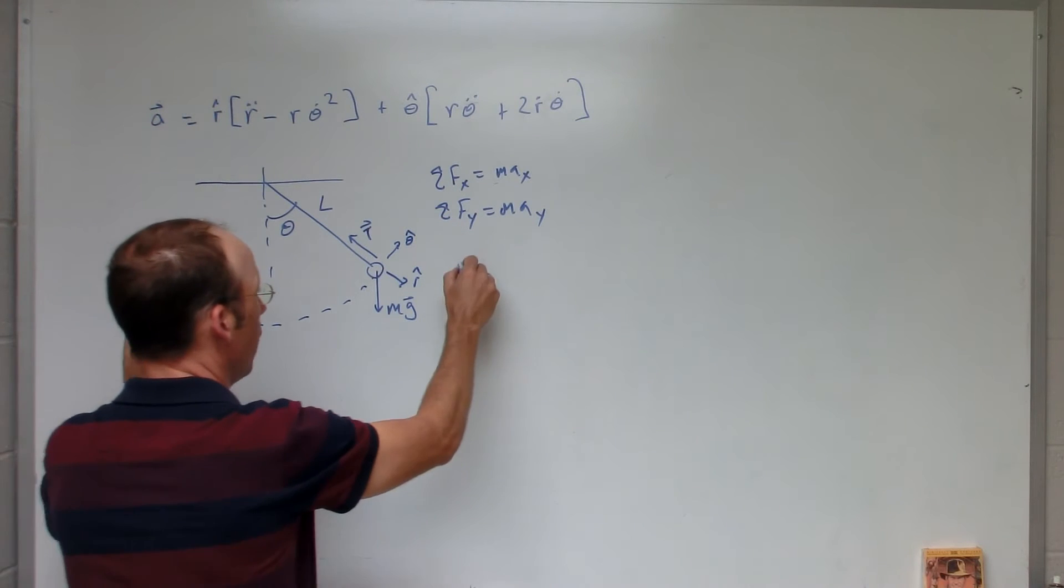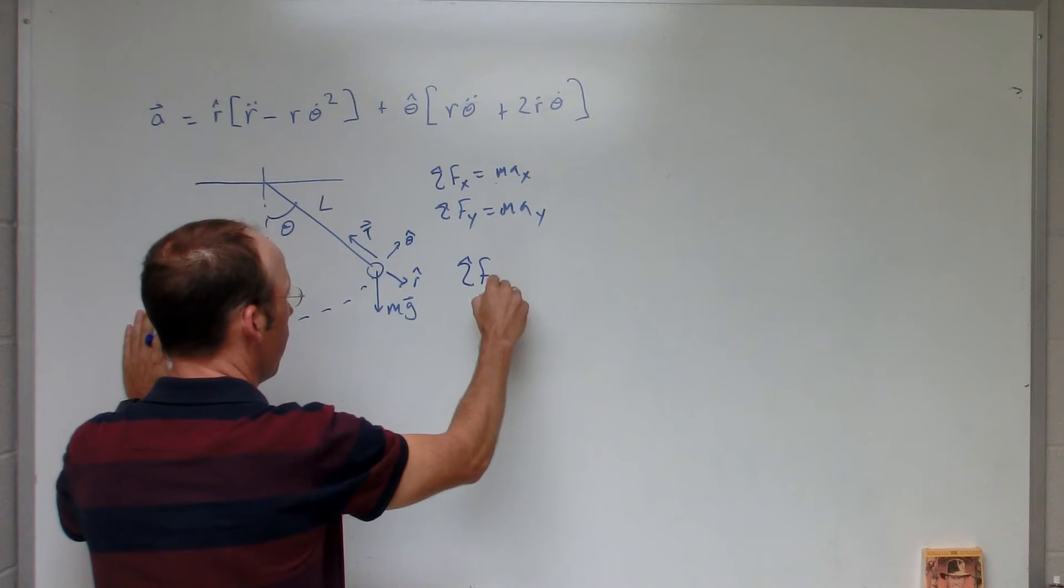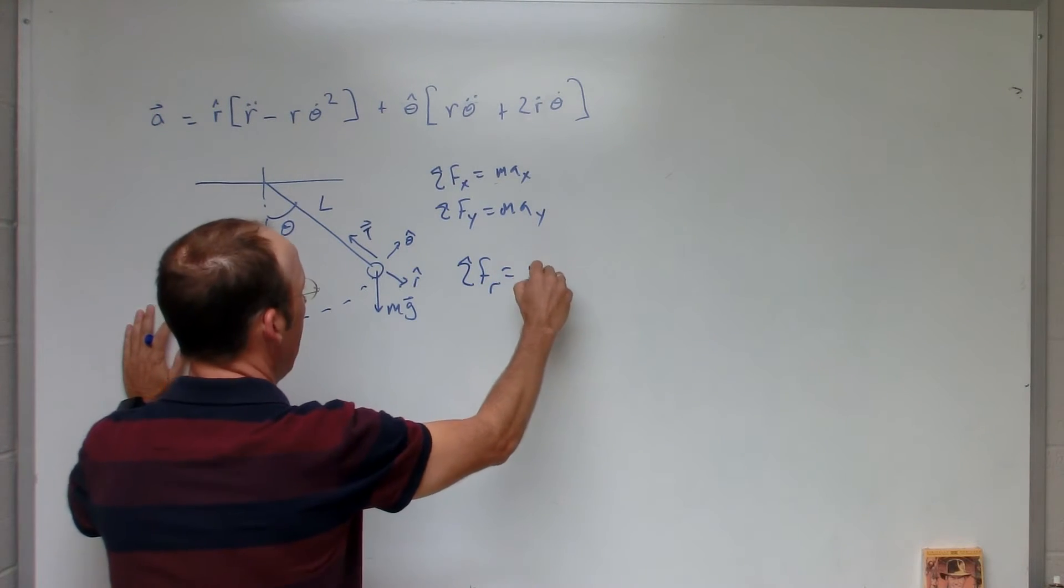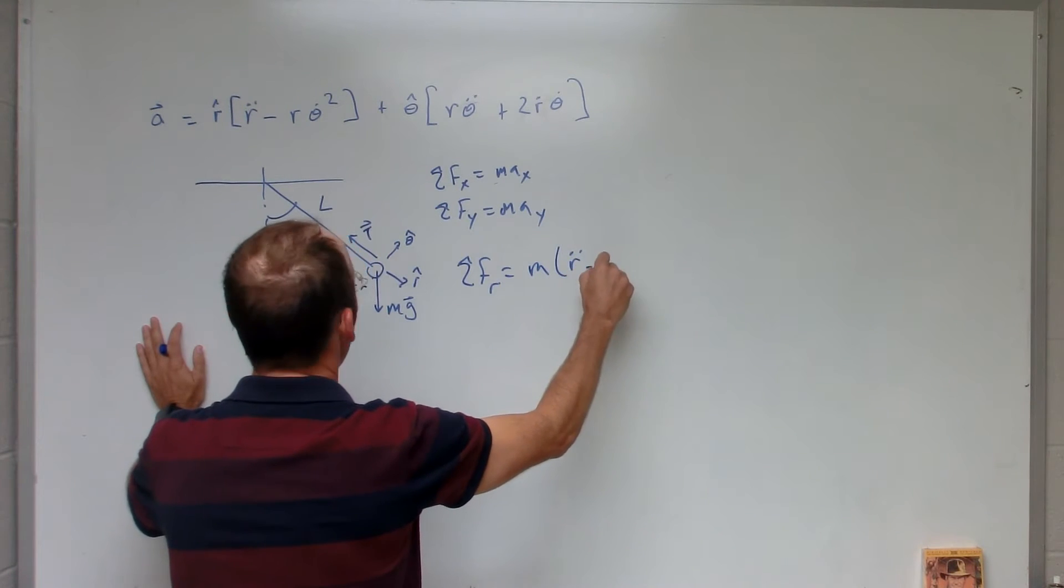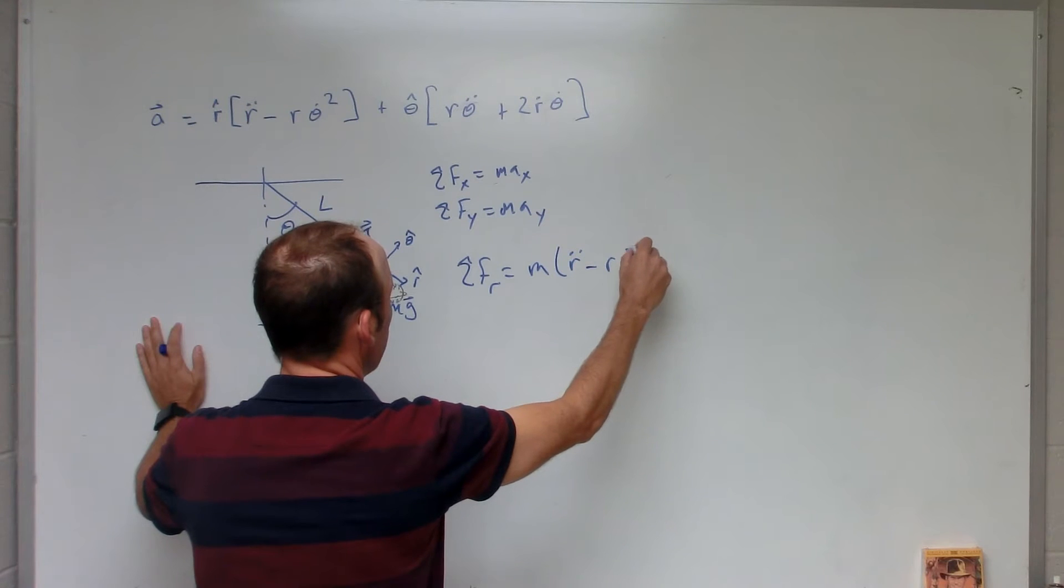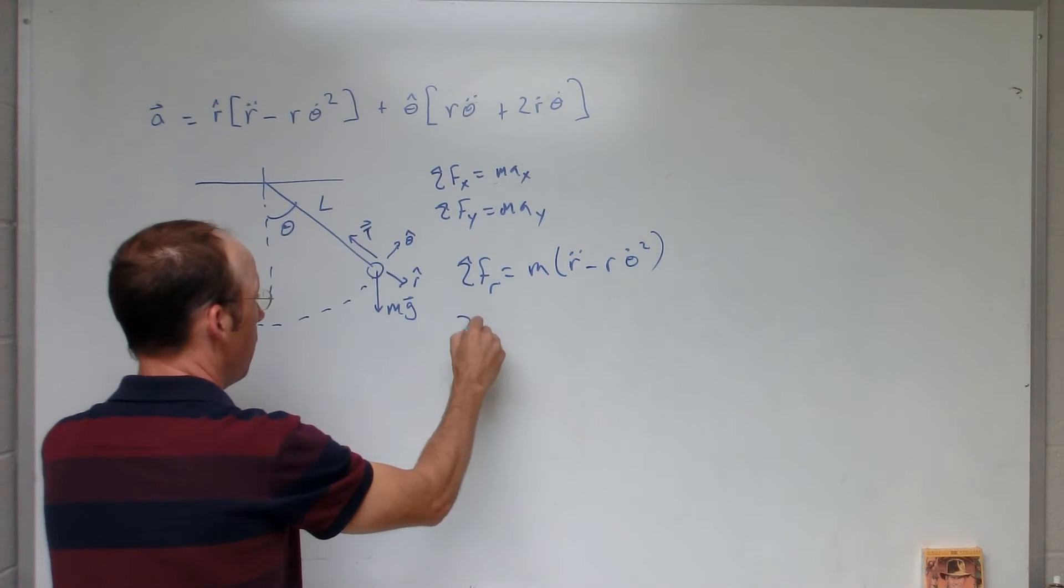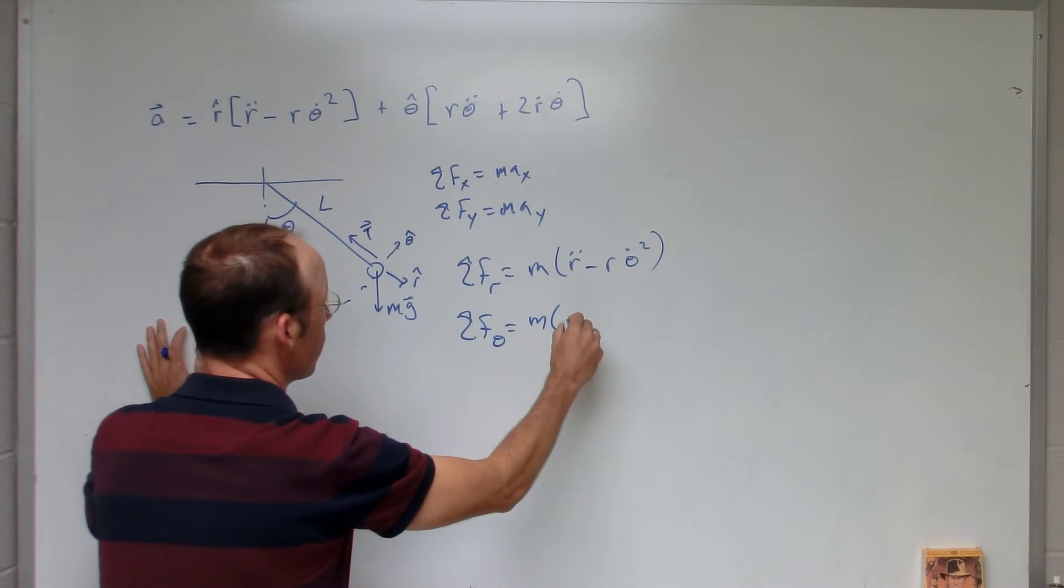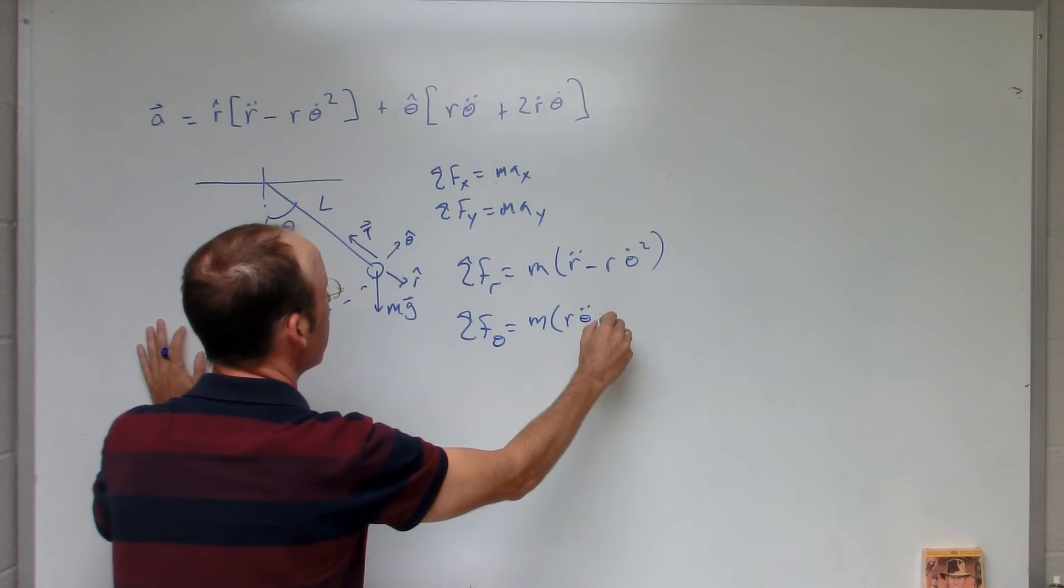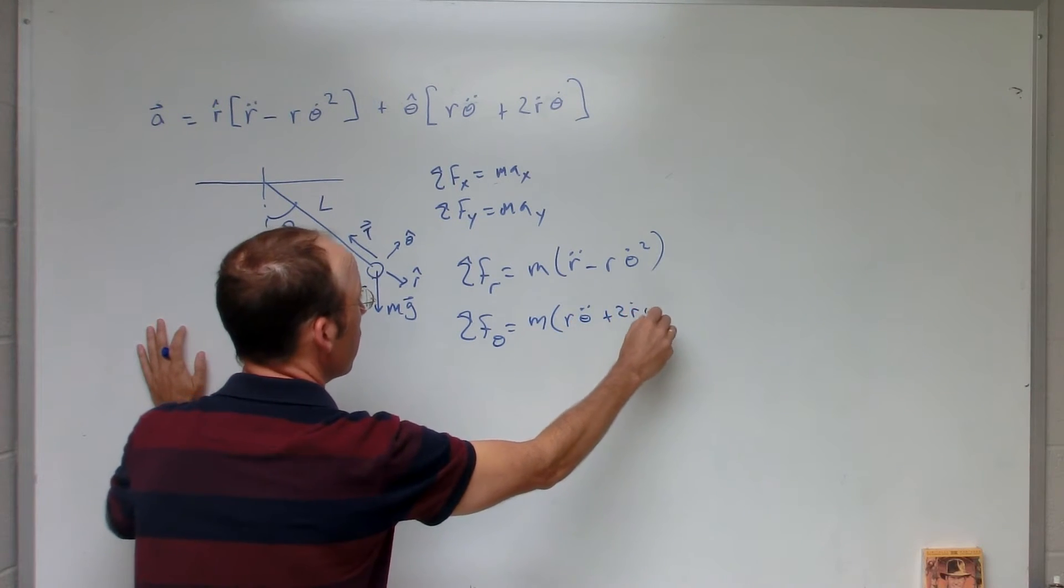So, instead I want to write the sum of the forces in the r direction is going to be mass times acceleration in the r direction, r double dot minus r theta dot squared. And the sum of the forces in the theta direction is going to be mass times r theta double dot plus 2 r dot theta dot.